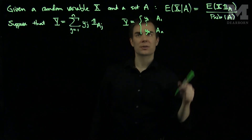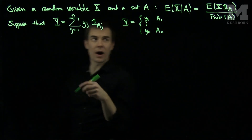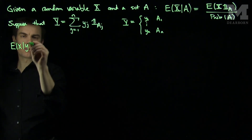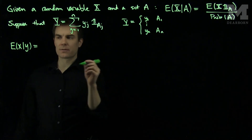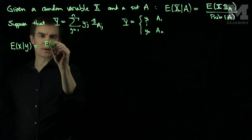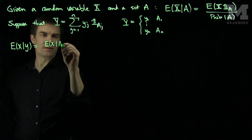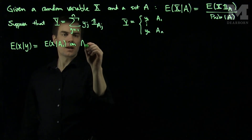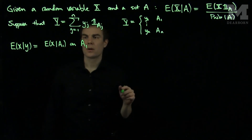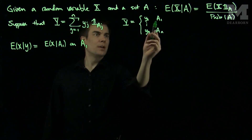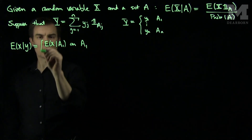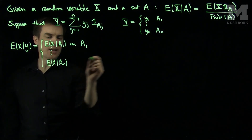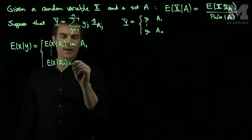I can use this definition of conditional expectation to condition the random variable X on the random variable Y. By definition, the conditional expectation of X given the random variable Y will be the following piecewise function: the conditional expectation of X given the set A1 on A1 — which is the same as saying Y equals Y1 — down to the conditional expectation of X on An, where Y equals Yn.